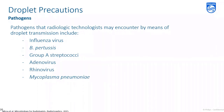Common pathogens that would require droplet precaution include influenza virus, B. pertussis (commonly known as whooping cough), group A streptococci, adenovirus, rhinovirus, and mycoplasma pneumoniae, which is referred to as walking pneumonia.